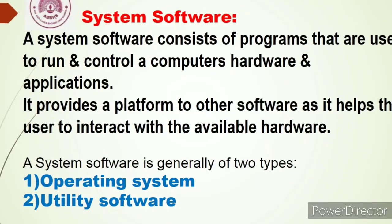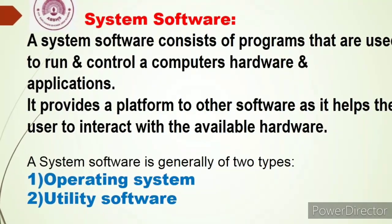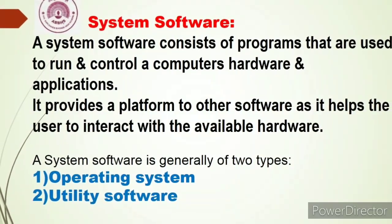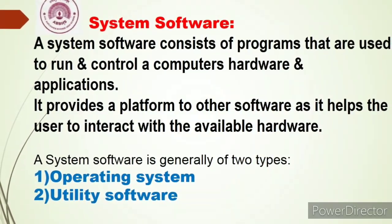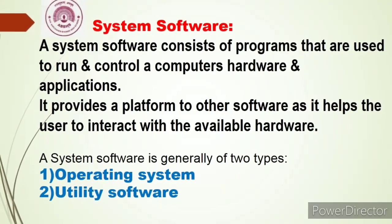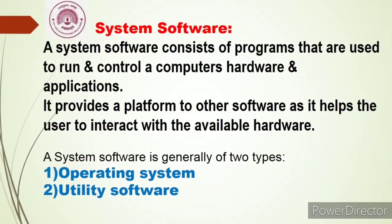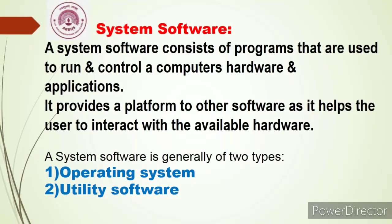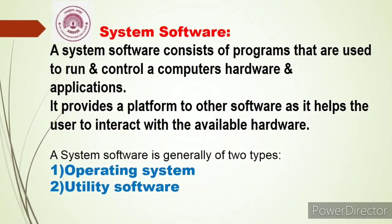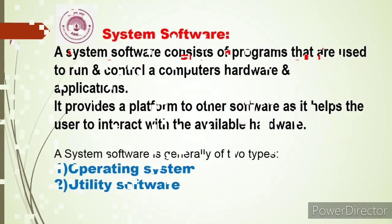The system software consists of programs that are used to run and control a computer's hardware and its applications. It also provides a platform to other softwares and helps the user to interact with the available hardware. System software is generally of two types: one is operating system, and number two is utility software.